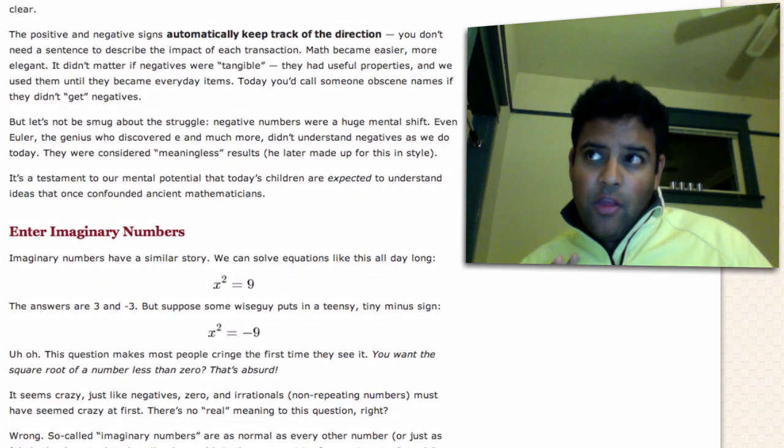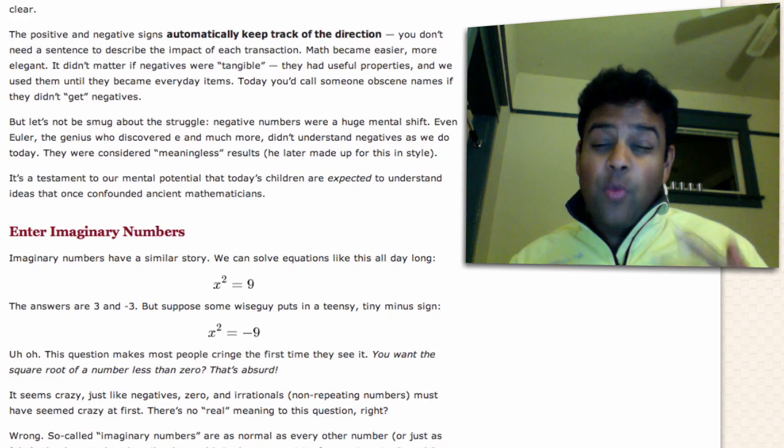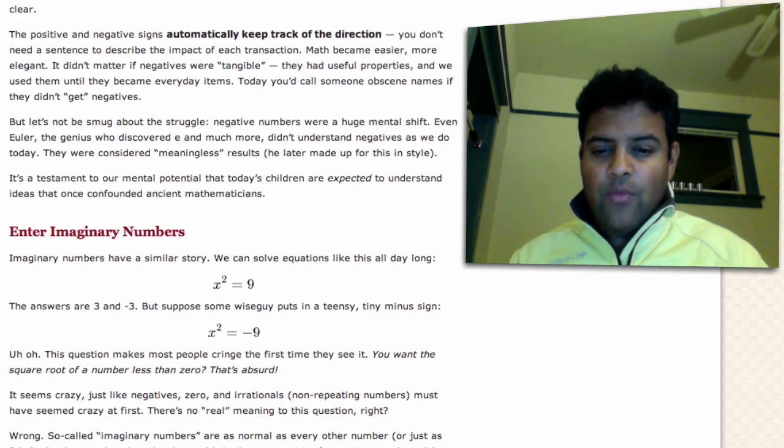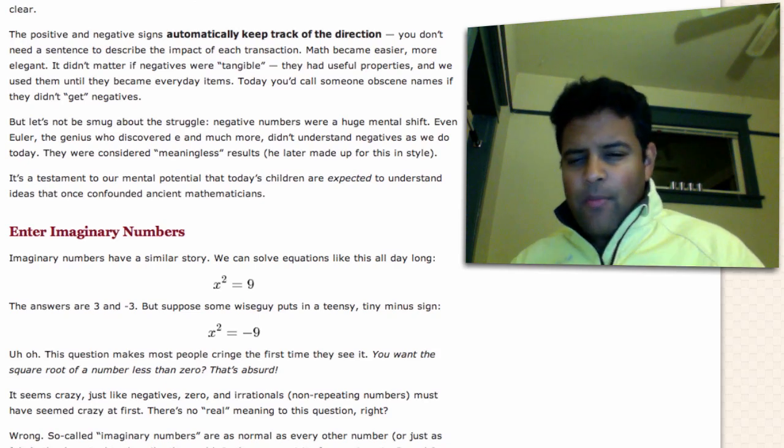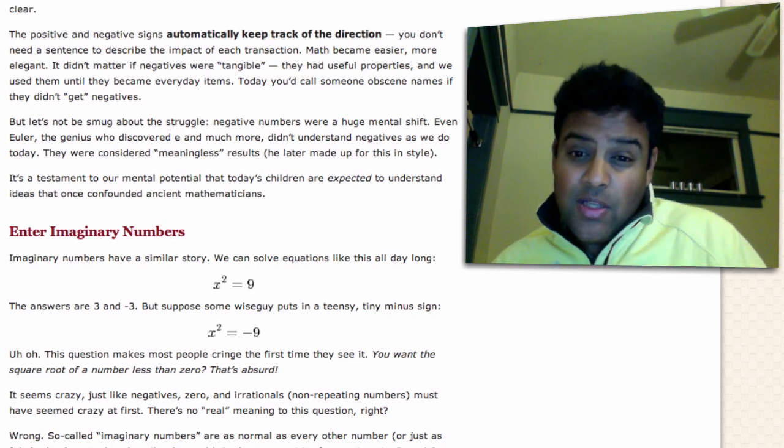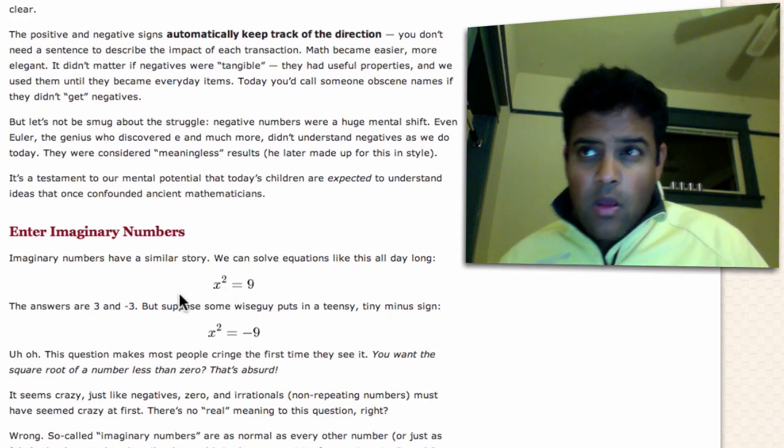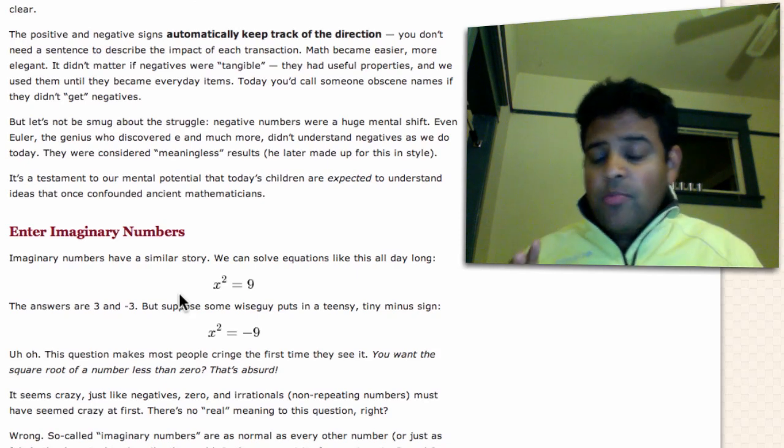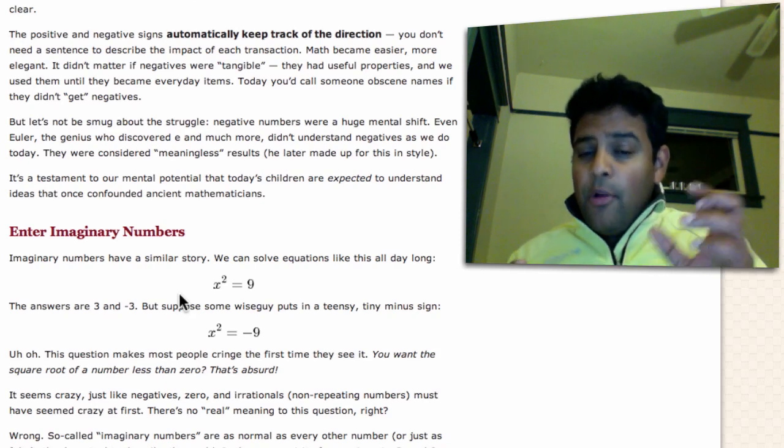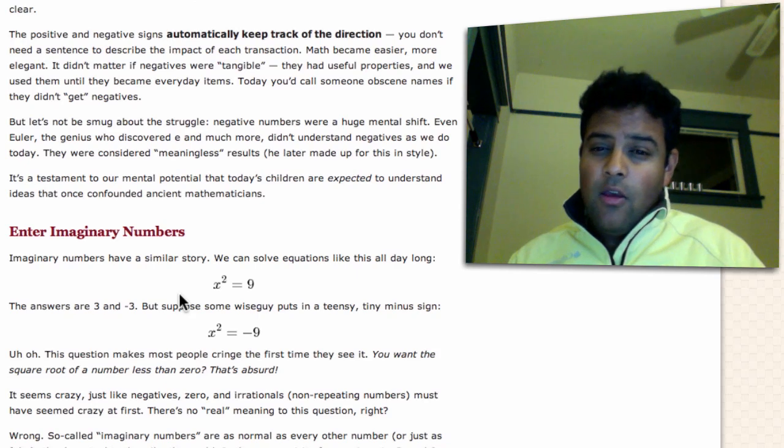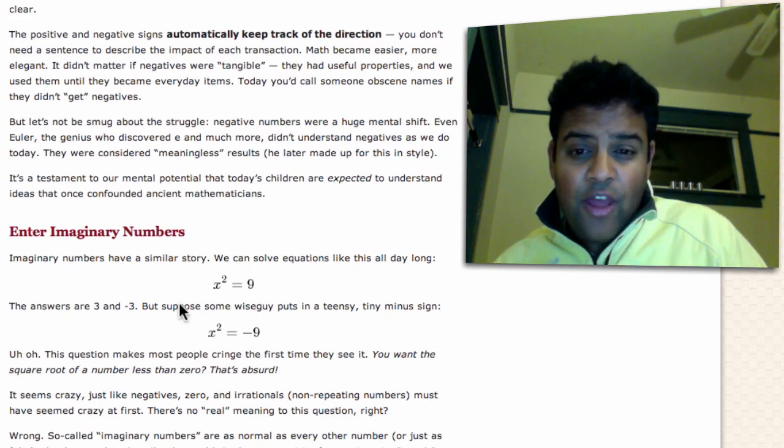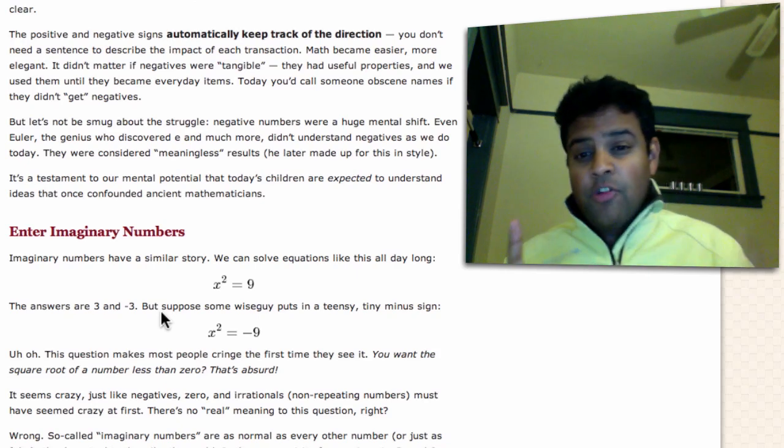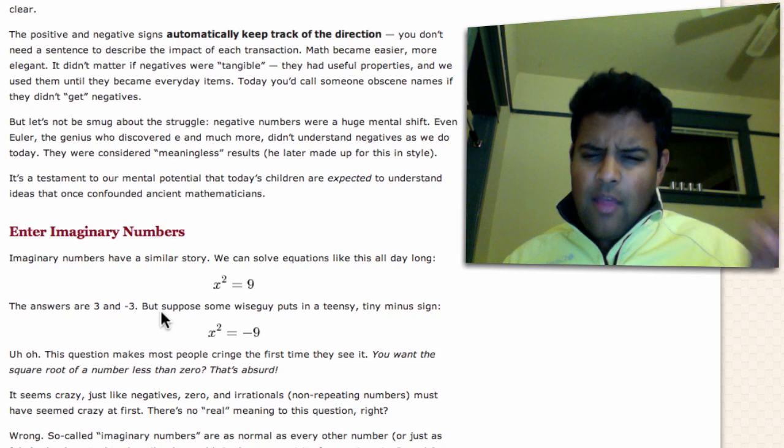The main thing that you want to think about is what does it mean to square a number? You've probably seen that i squared equals negative one. But what does that mean? Well, let's take a step back. When I say, when I have a simple equation like x squared equals nine, what I'm really saying is I start with 1.0, I multiply it by x, I multiply it by x again, and then I get nine.